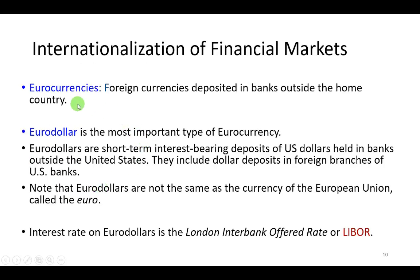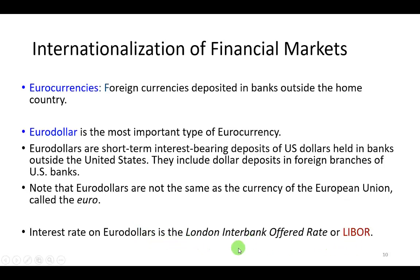We also have eurocurrencies, which are foreign currencies deposited in banks outside of the home country. The most important eurocurrency is the eurodollar. Eurodollars are short-term interest-bearing deposits of U.S. currency held in banks outside of the United States. The interest rate on these loanable dollar deposits is called LIBOR — short for London Interbank Offered Rate.